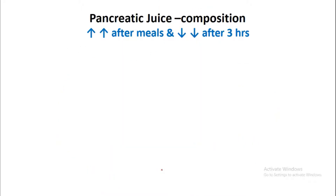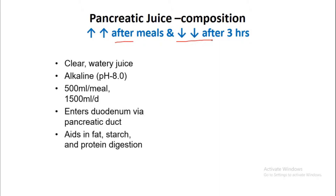Pancreatic juice composition: it increases after a meal and decreases three hours after the meal. It is a clear, watery, alkaline juice with a pH around 8.0, whereas the gastric pH is around 2-3. It is secreted at about 500 ml per meal or 1500 ml per day, and it enters the duodenum via the pancreatic duct. Pancreatic juice aids in fat, starch, and protein digestion.